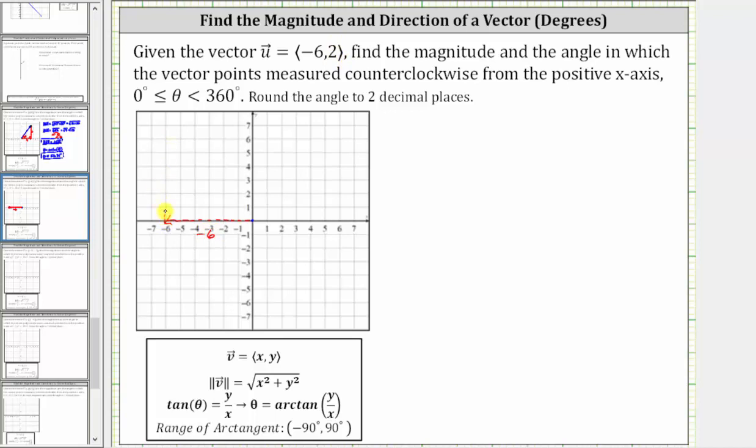And because the y component is two, from here we move up two units. This is where the terminal point of the angle in standard position would be. Here's the graph of the vector in standard position.